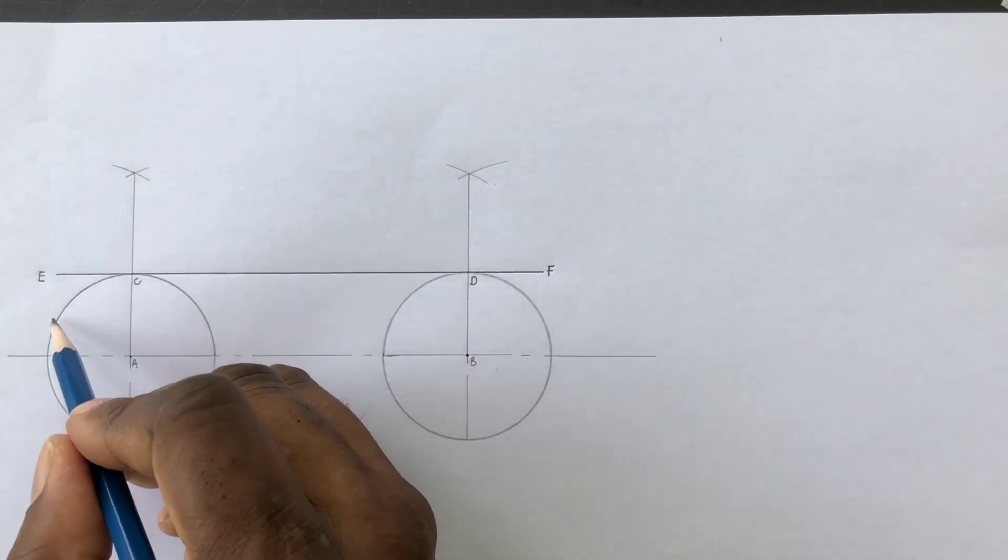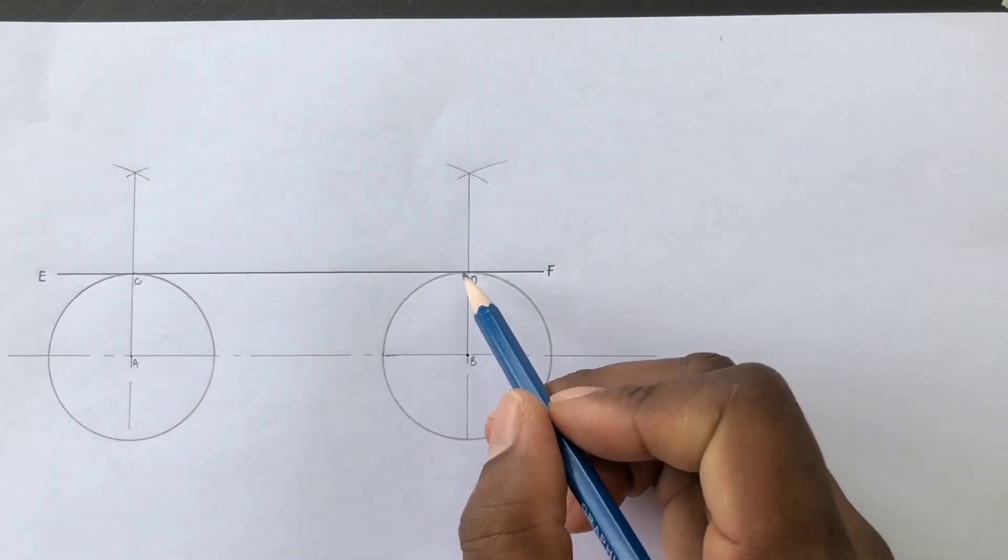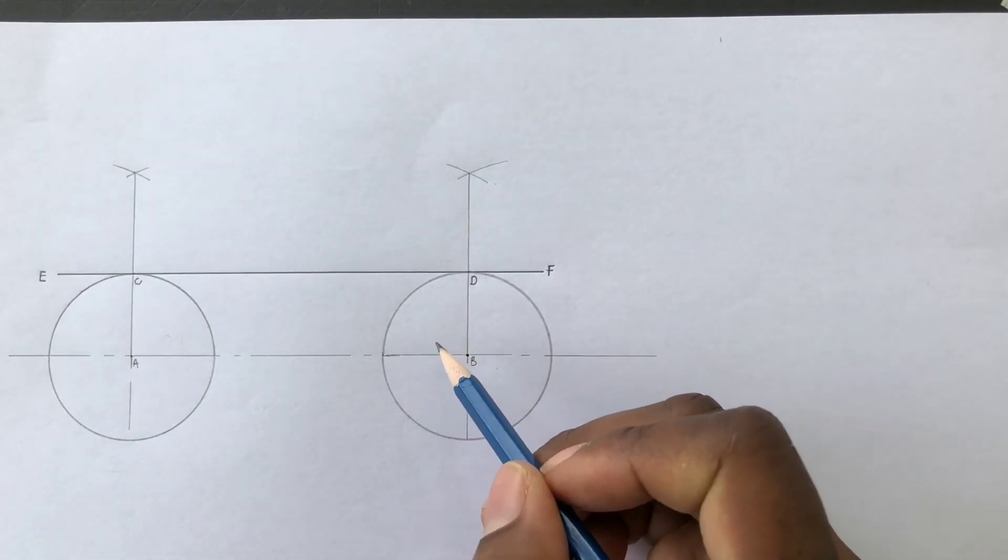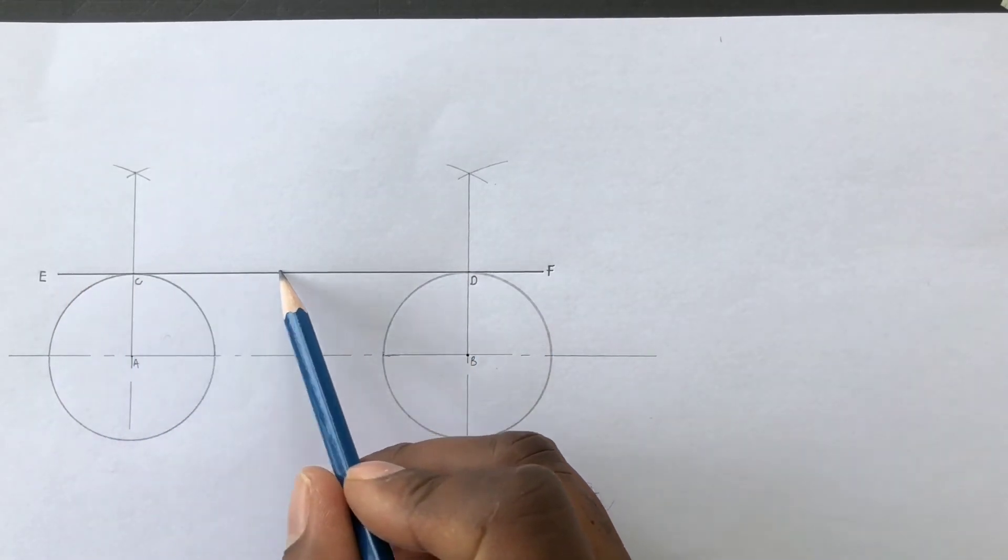Now to two equal circles, we have just drawn a common external tangent E, F.